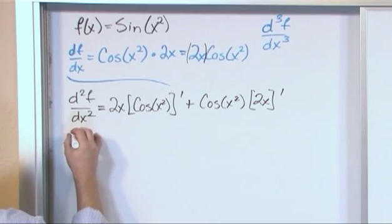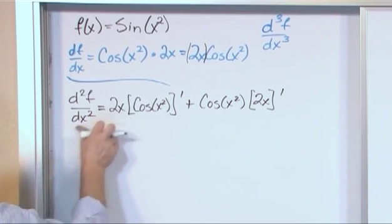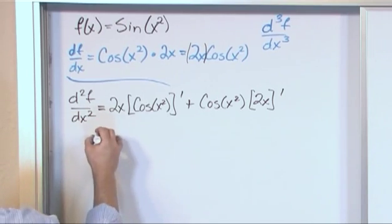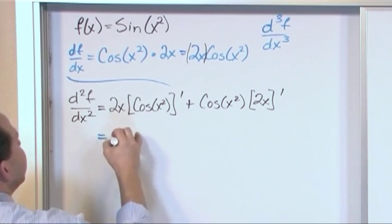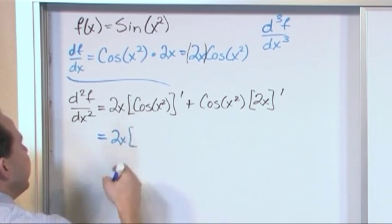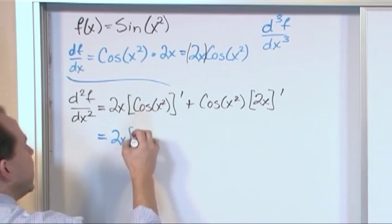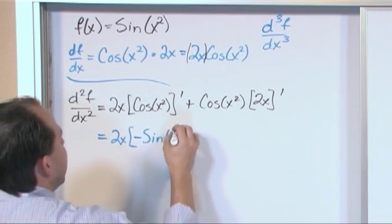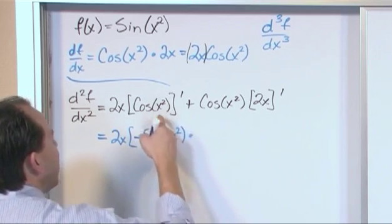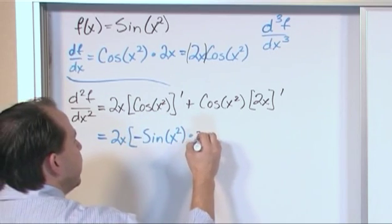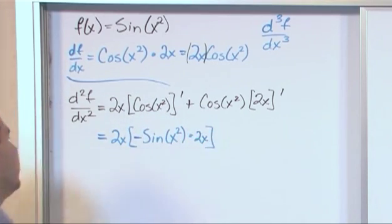All right, so second derivative, I'm just going to keep it here, not keep rewriting this over and over again. So what this is going to be, 2x, what is the derivative of this term? Again, we have to use the chain rule. Derivative of cosine is negative sine x squared. We have to multiply by the derivative of the inside, which is 2x. Okay? So we've done that.